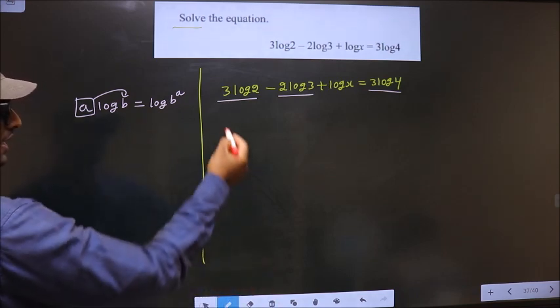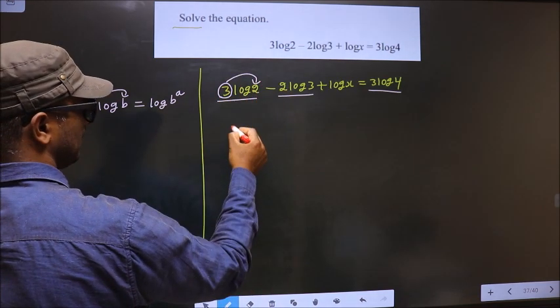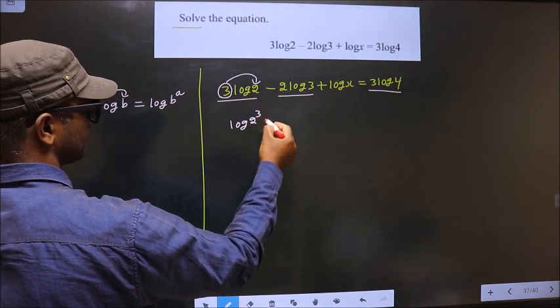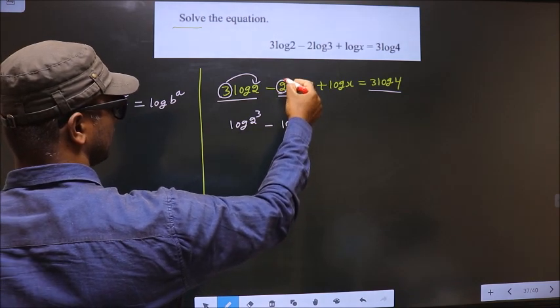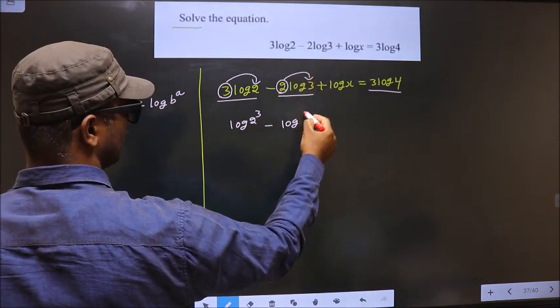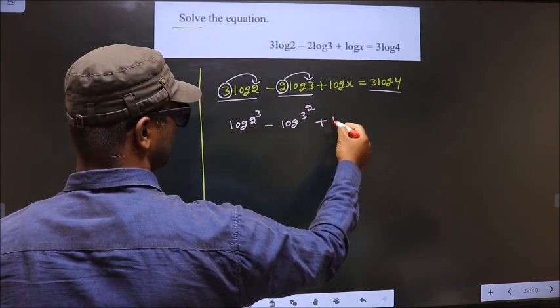Here the number is 3, so it goes as the power making it log 2 to the power 3. The number 2 goes as the power making it log 3 squared. Here there's no number, so it stays as is.